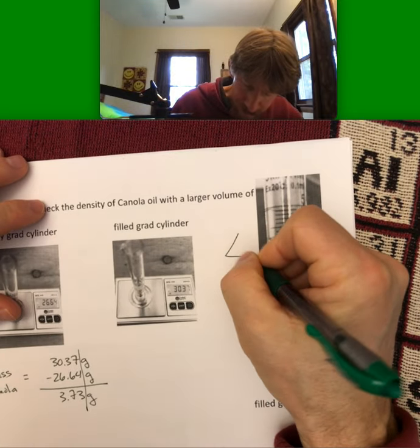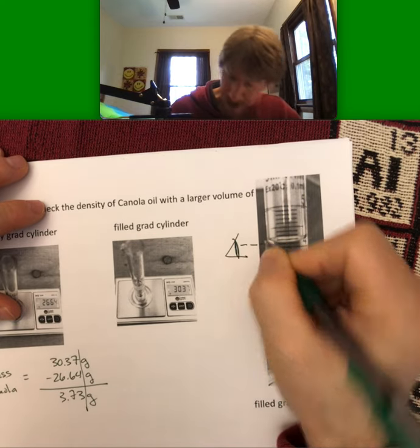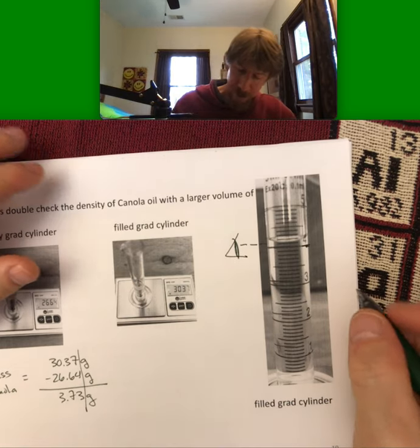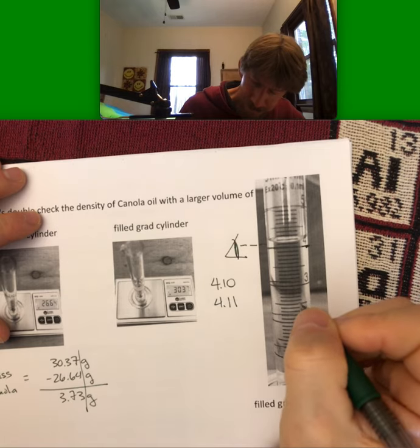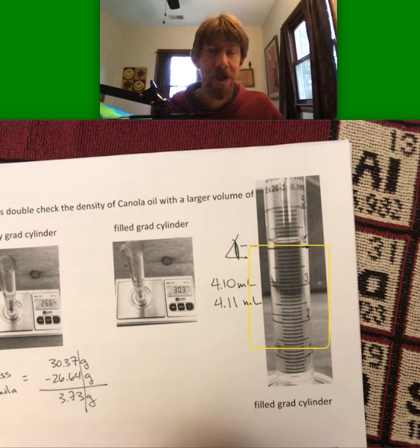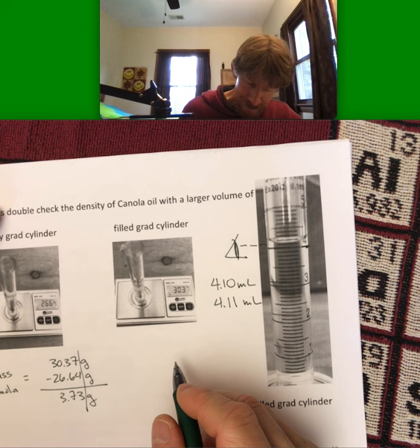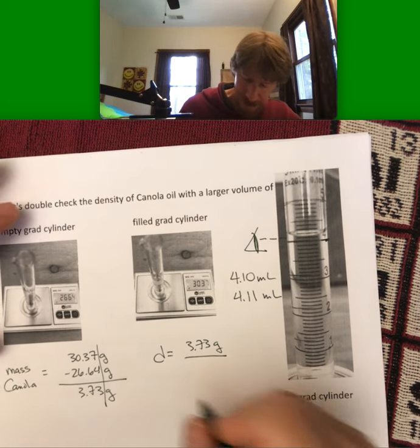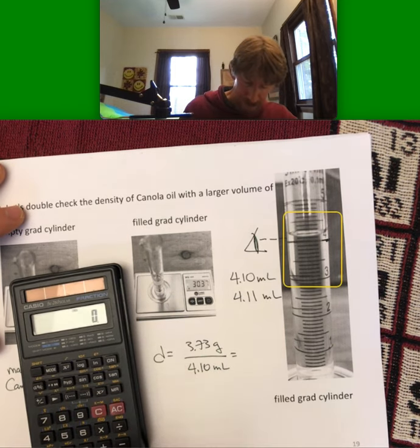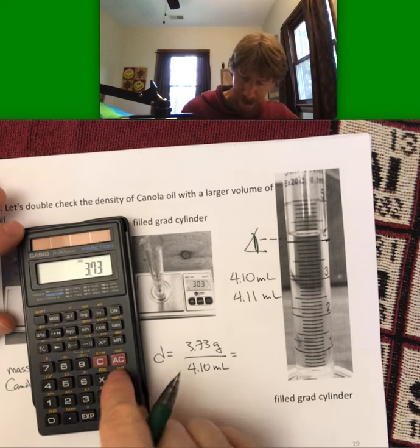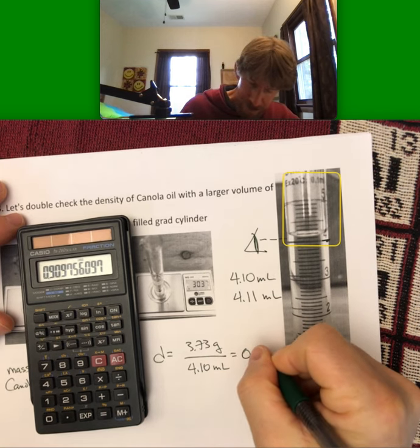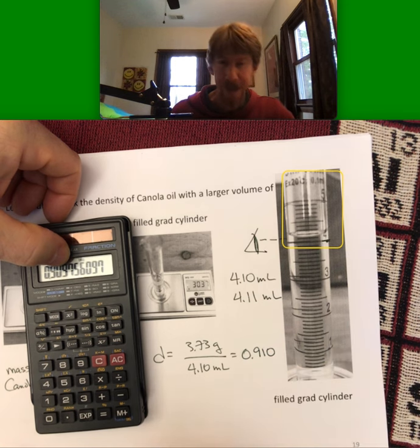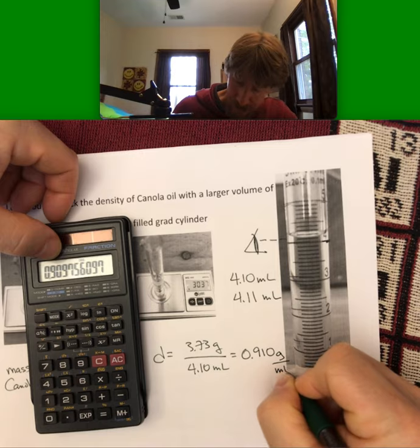My volume this time, looking straight across - the 4 line is right here, 4.1. I could give that 4.10, 4.11 milliliters. When you punch in your numbers, both will be acceptable. Density equals 3.73 grams over 4.10 milliliters. 3.73 divided by 4.10. This time I get 0.909, that 9 due to the 7 is going to round up. I get 0.910 to three sig figs, grams per milliliter.